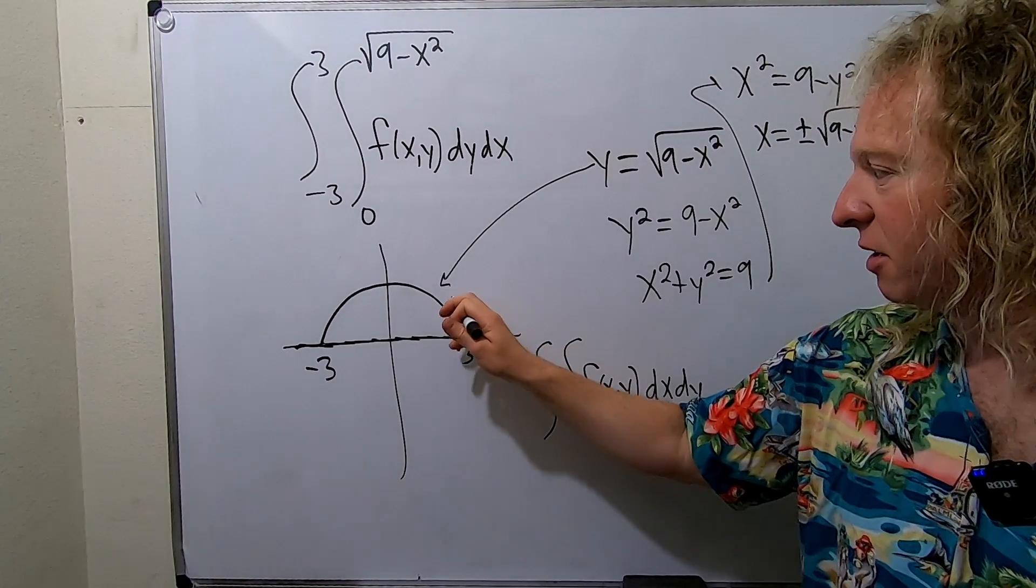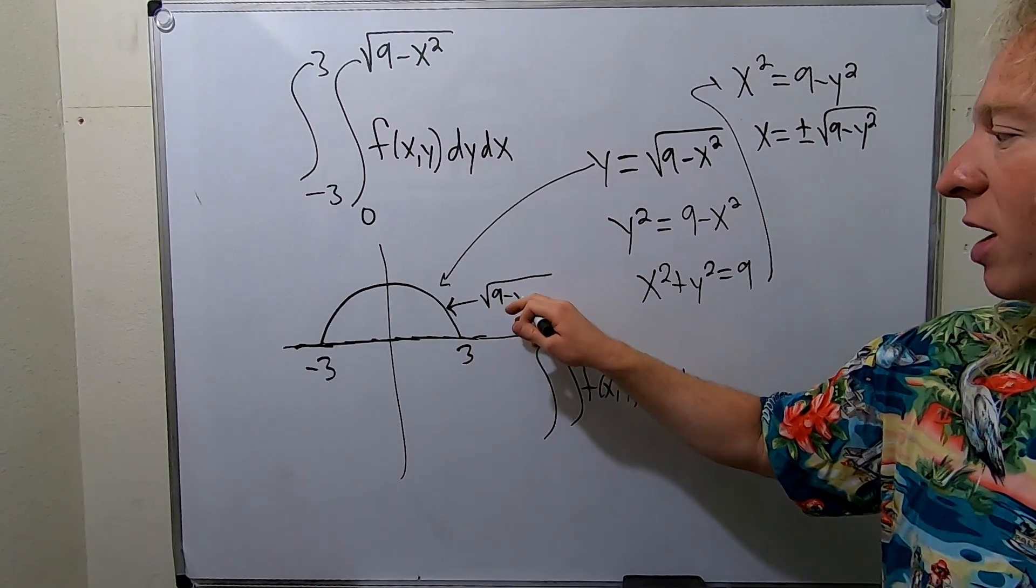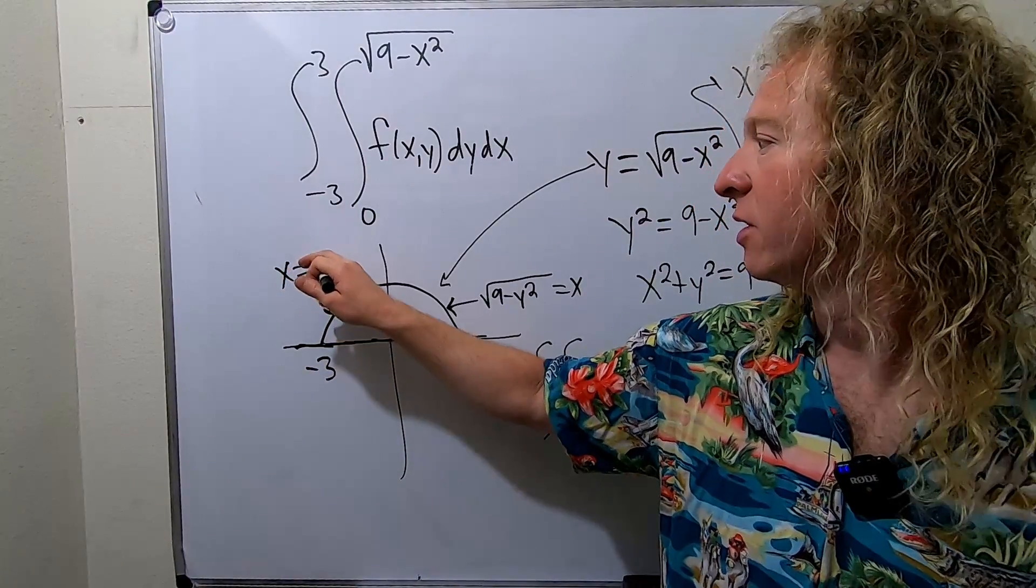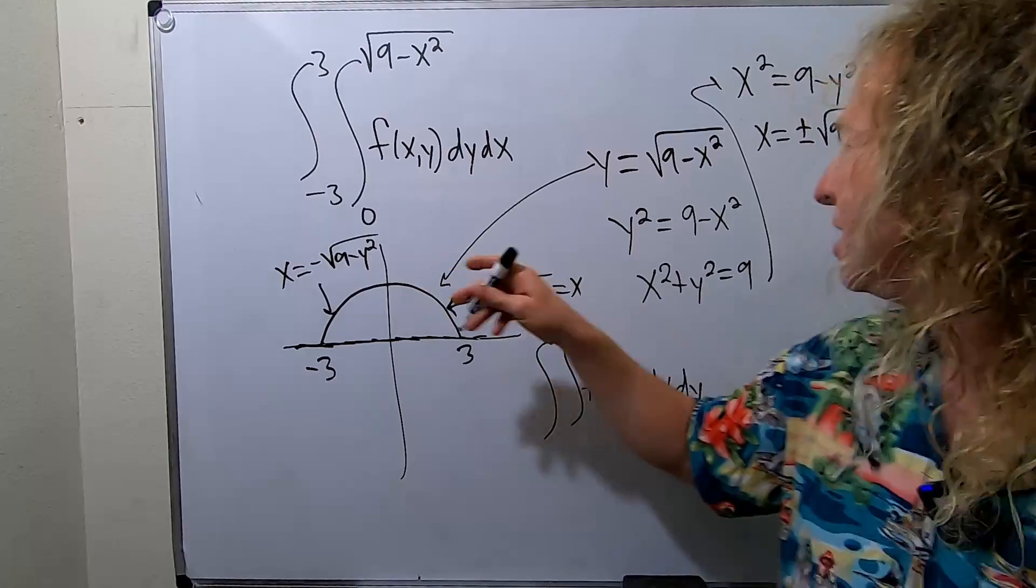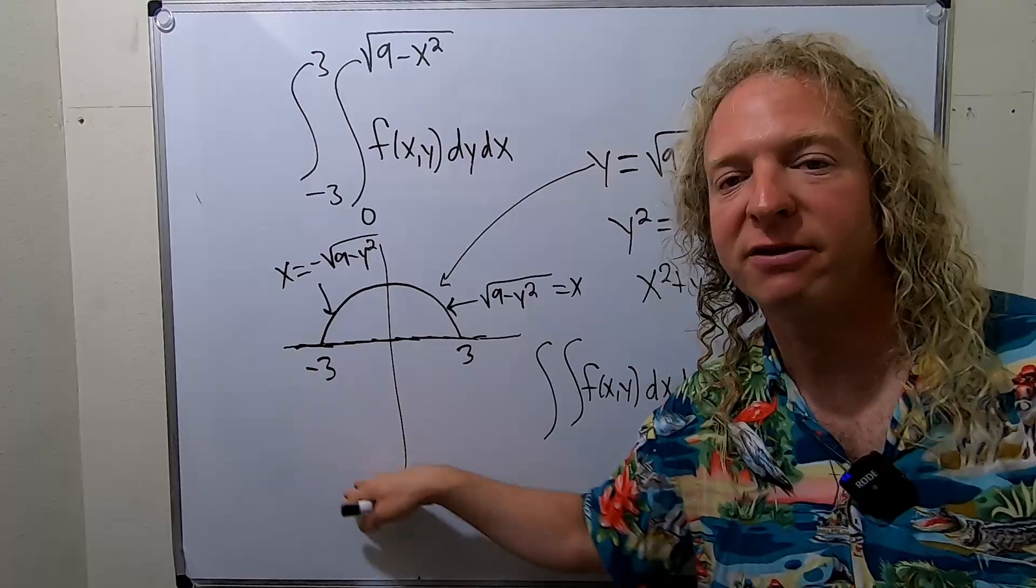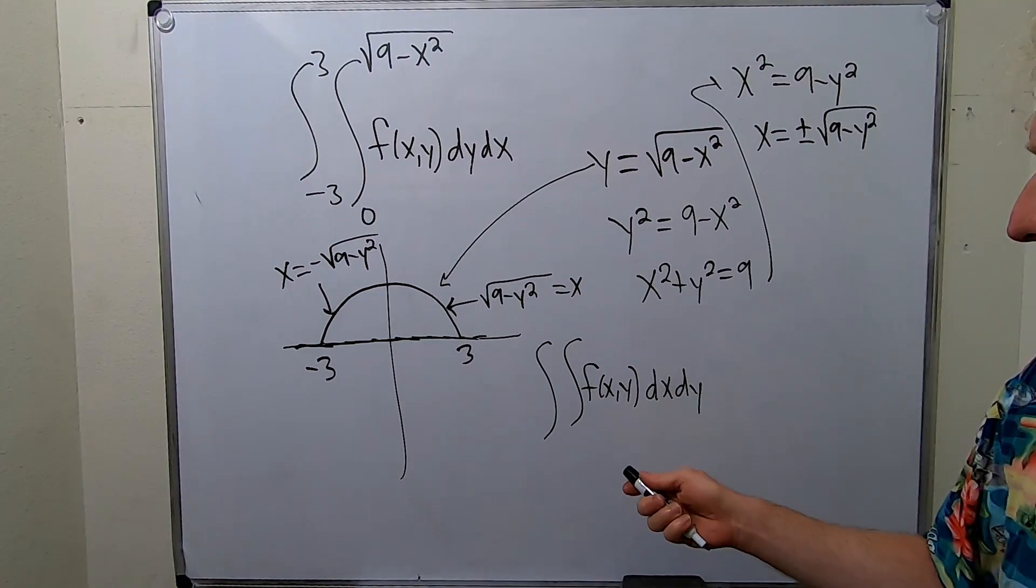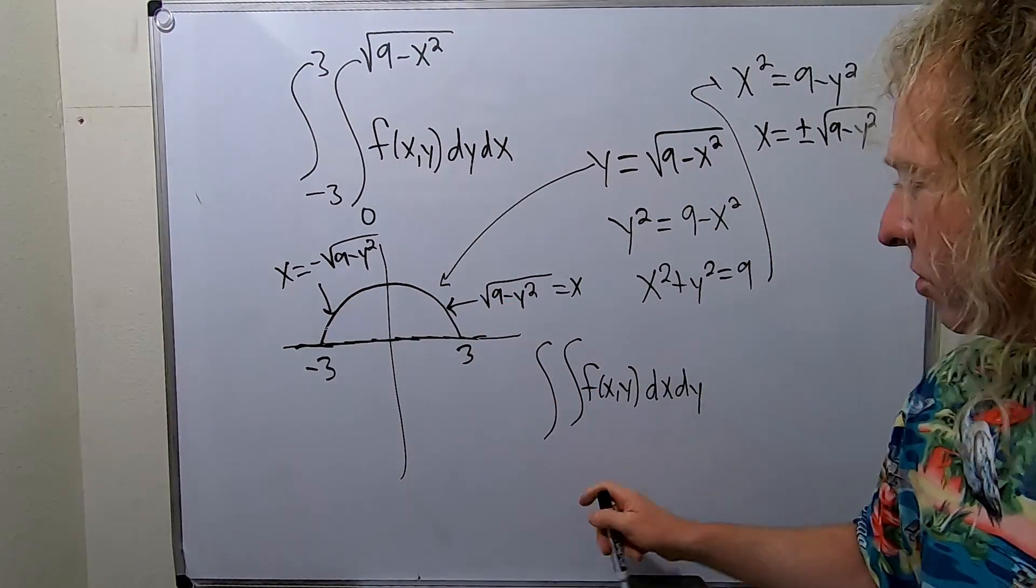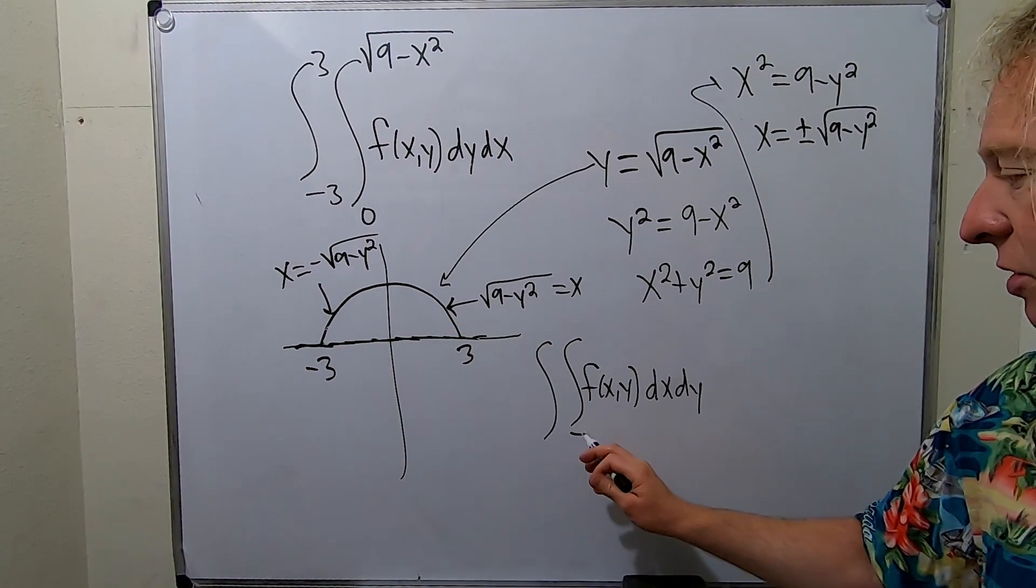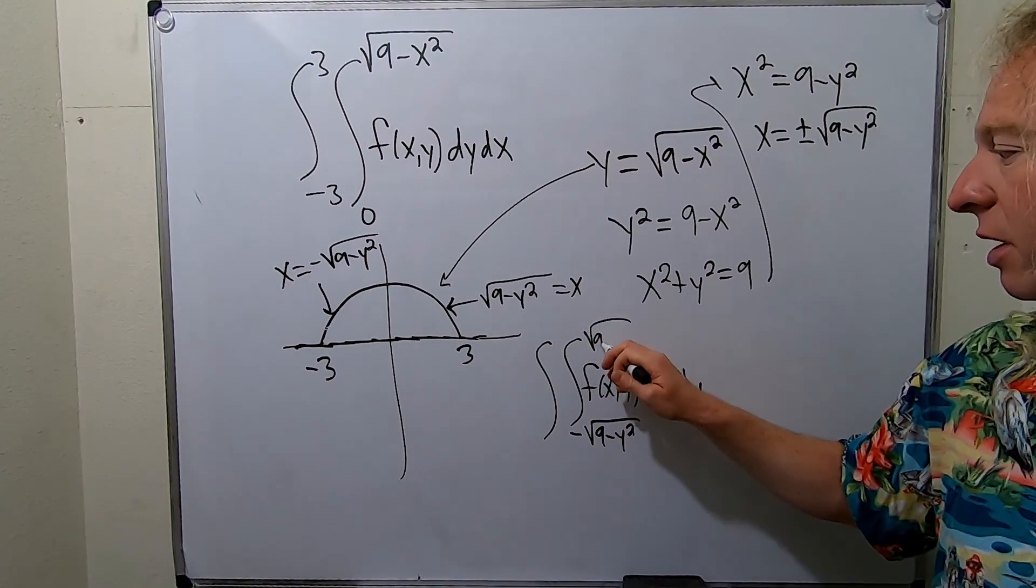This piece here, this right piece, is going to be the positive square root of 9 minus y squared. And this piece here is the negative. Basically the positive one is the entire right half of the circle. The negative one is the entire left half of the circle. Except we have other restrictions. We have a y up the x-axis here. So x is going from here to here. This will be negative square root of 9 minus y squared to the square root of 9 minus y squared.